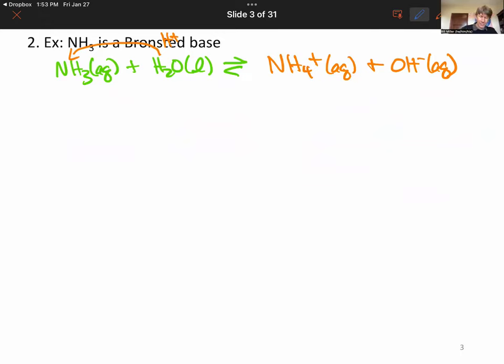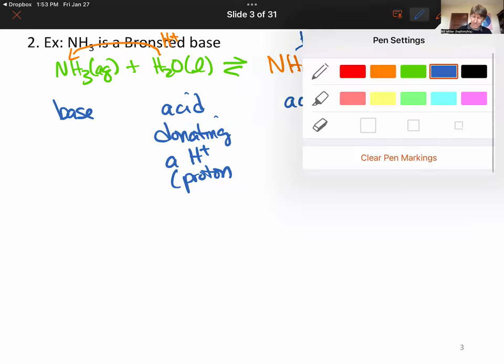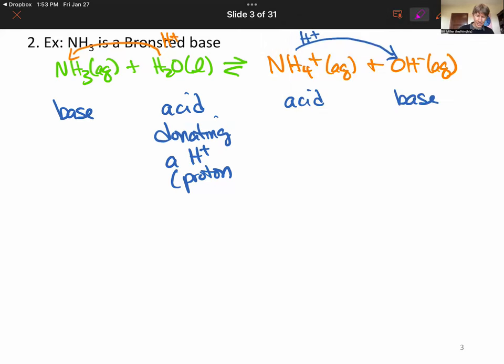Let's do this one here. We know NH3 is a base. It is still a base. We know water is an acid now. Water is an acid because it is donating a proton. Then on the other side, if we think of this reaction in the reverse direction, we have an acid right here, NH4-plus, and a base, OH-minus, with H-plus moving in the other direction.